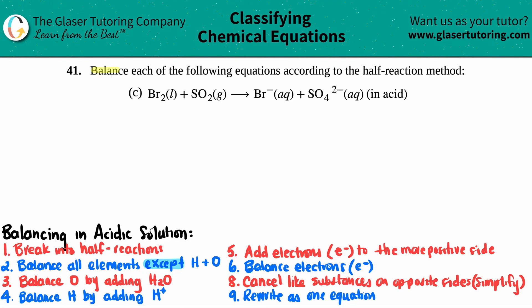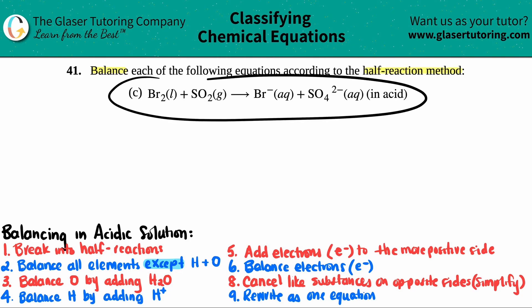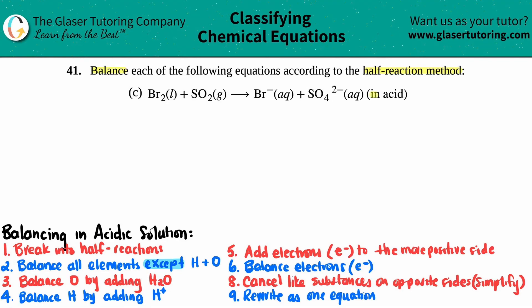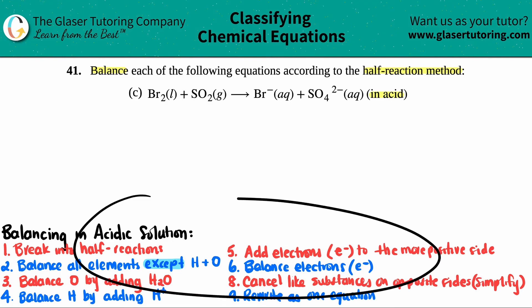Number 41, balance each of the following equations according to the half-reaction method — letter C. We have to balance Br₂ liquid plus SO₂ gas, which yields bromide ion Br⁻ and sulfate ion SO₄²⁻. We have to balance this in an acidic solution. We've done like 30-plus balancing redox reactions, so we've got this.